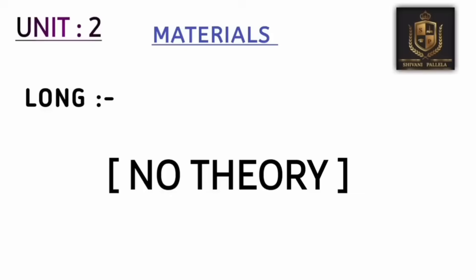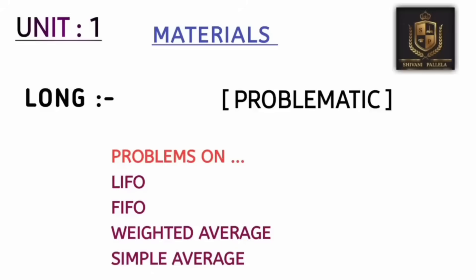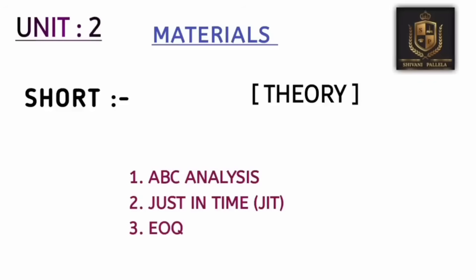In unit two there is no theory — it is compulsorily problem-based. You need to learn the problematic part for both long and short answers. The materials chapter is an easy chapter. The four problematic methods are LIFO, FIFO, Weighted Average, and Simple Average. If you are perfect with LIFO, FIFO, and Weighted Average, you will definitely attempt one long question and one short question — 12 marks plus 4 marks equals 16 marks. Combined with unit one, that gives you 32 marks total.